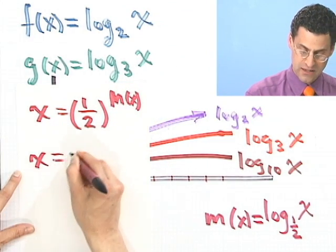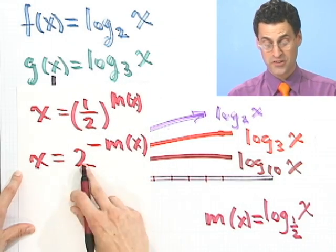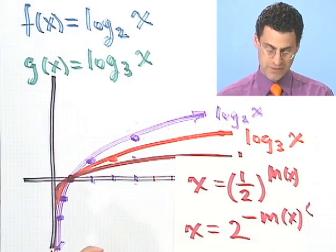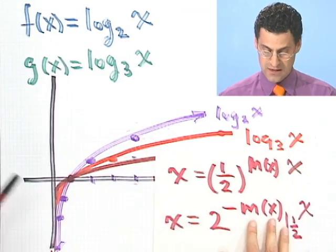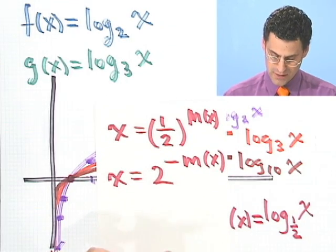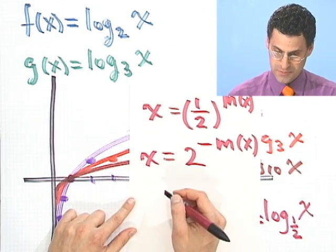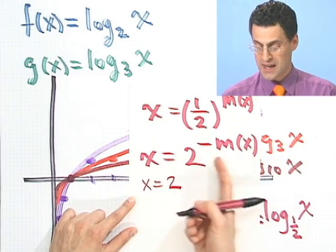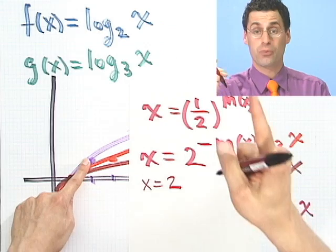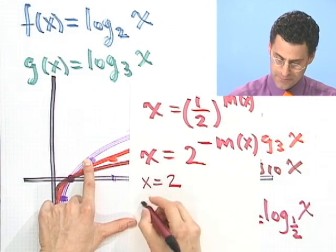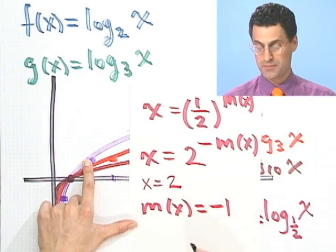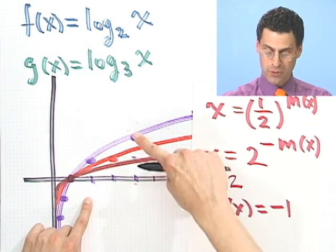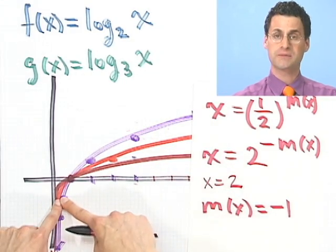So basically, what I'm going to do is I'm going to have the same graph as this, but now I'm going to have a negative exponent. And what that does is basically flips along the x-axis. If I plug in x equals 2, m wouldn't be just 1 like it was before. It would have to be negative 1 to make up for the negative sign in front of this. Because 2 to the negative negative 1 is 2. So this point that used to be 1 is now going to be negative 1. And this point that used to be 2 will now be negative 2.